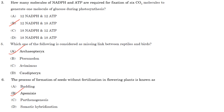How many molecules of NADPH and ATP are required for fixation of 6 carbon dioxide molecules to generate one molecule of glucose during photosynthesis? In the Calvin cycle, you require 3 ATP and 2 NADPH to fix a single molecule of carbon dioxide. For 6 molecules of CO2, you need 18 ATP and 12 NADPH.